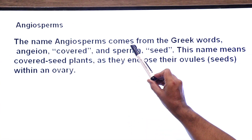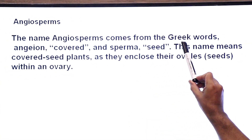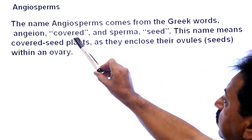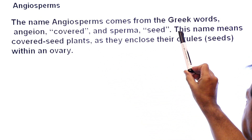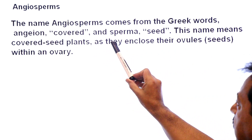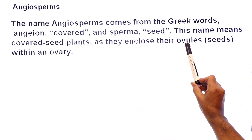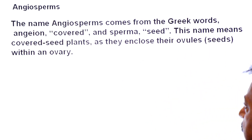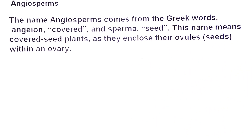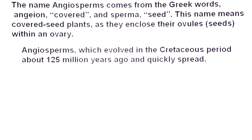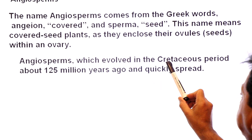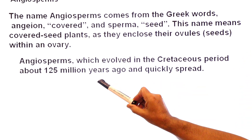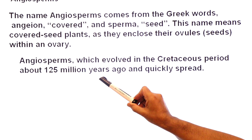The name angiosperms comes from Greek words: angion means covered and sperma means seed. This name means covered seed plants, as they enclose their ovules and seeds within ovaries. Angiosperms evolved in the Cretaceous period about 125 million years ago and quickly spread.